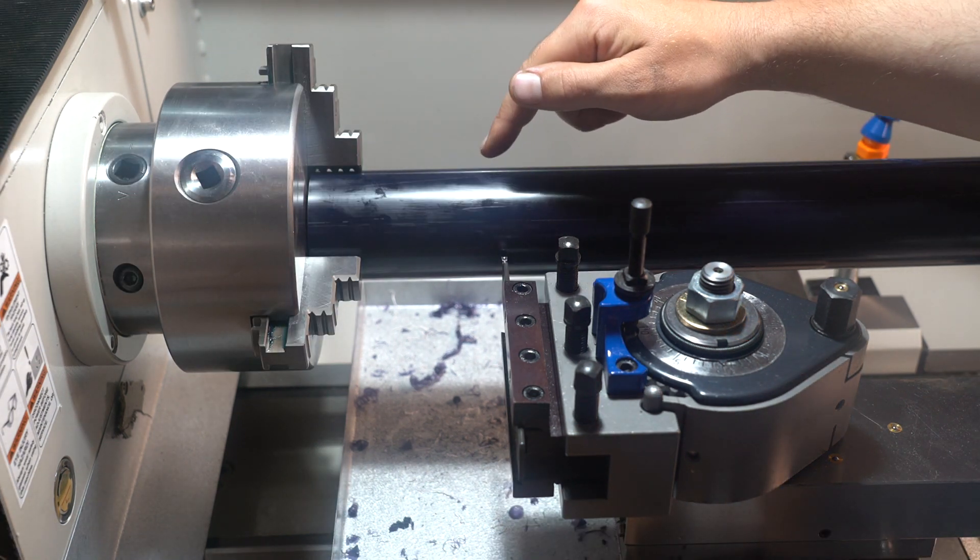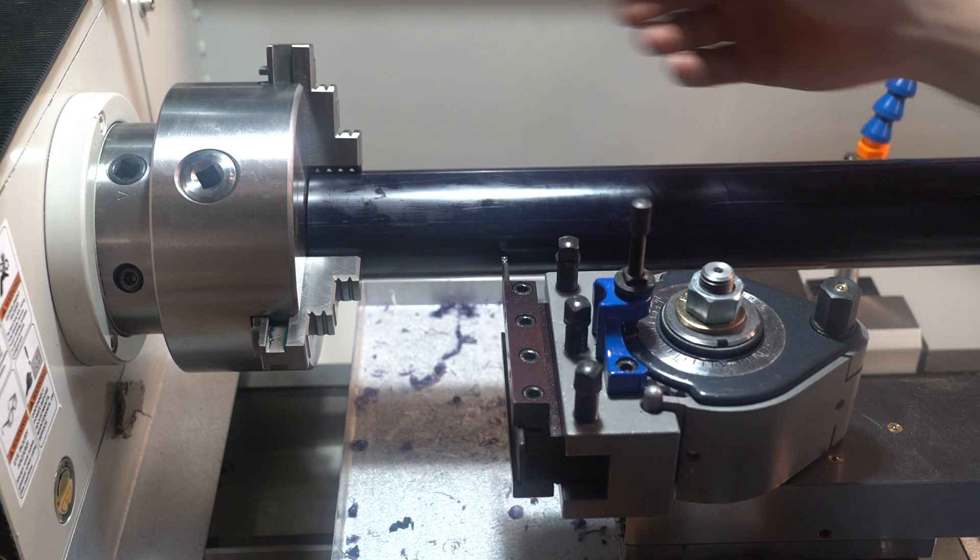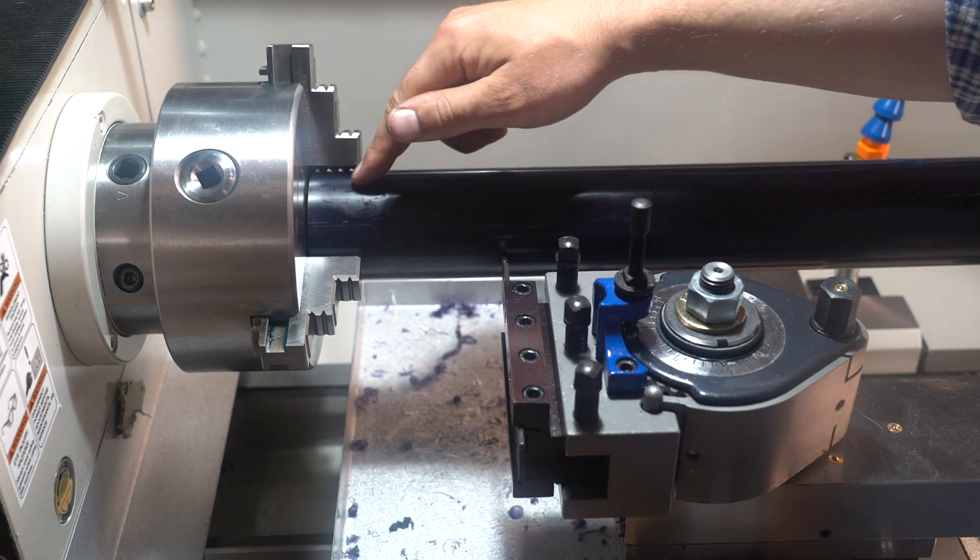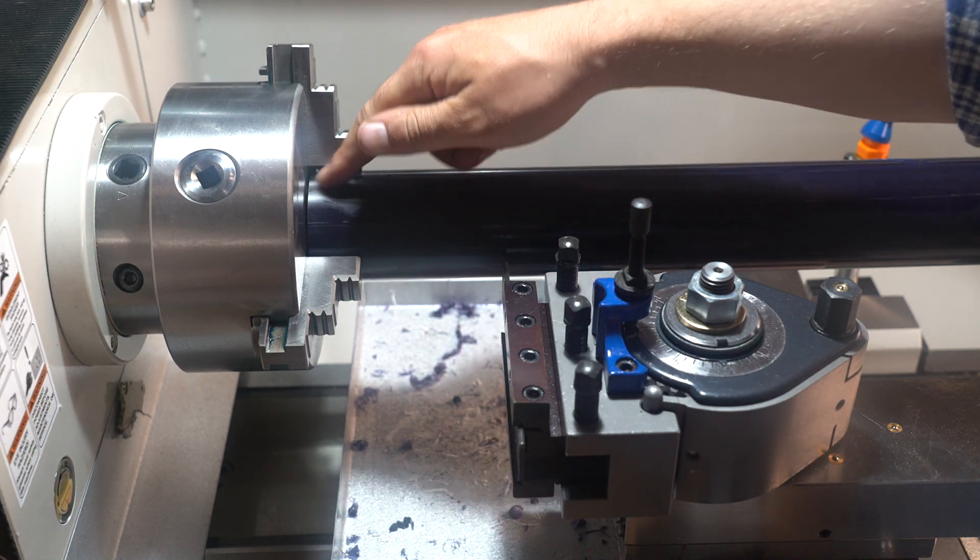So I'm going to part it off over here. I've calculated that I've got enough here for two bushings and some wasted plastic where I'm holding it in the chuck.